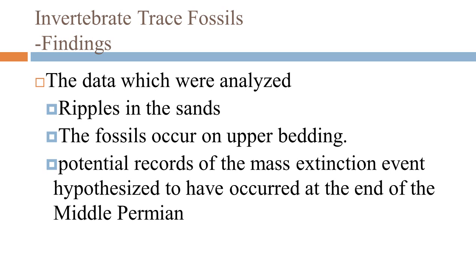The methods used to test the question involve examinations of sandstone and other strata of rock, as well as excavation of the area where the Middleton strata was first found. The findings at the site include ripples in the sand and fossils occurring on the upper bedding. These fossils may be potential records of the mass extinction event hypothesized to have occurred at the end of the middle Permian. Therefore, current findings provide a further paleo-environmental piece to the overall understanding of this bio-crisis.